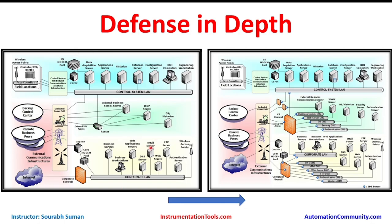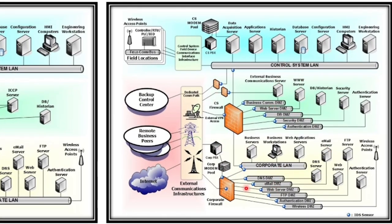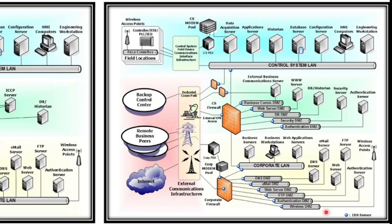We need to move from that flat architecture to an improved design. On the right side, we can see multiple firewalls implemented. A wireless DMZ is created for the wireless access point so all wireless communications pass through a firewall. An authentication DMZ monitors that traffic, an FTP DMZ monitors FTP communications, a web server DMZ monitors web traffic, an email DMZ checks all inbound and outbound email communications, and a DNS DMZ is created for DNS traffic — each application getting its own dedicated DMZ.